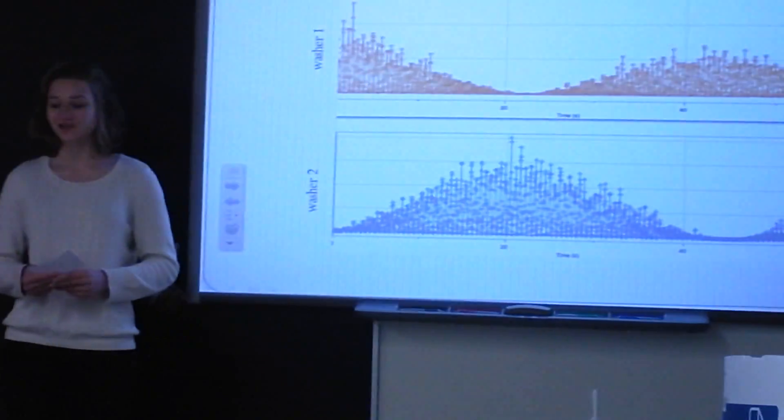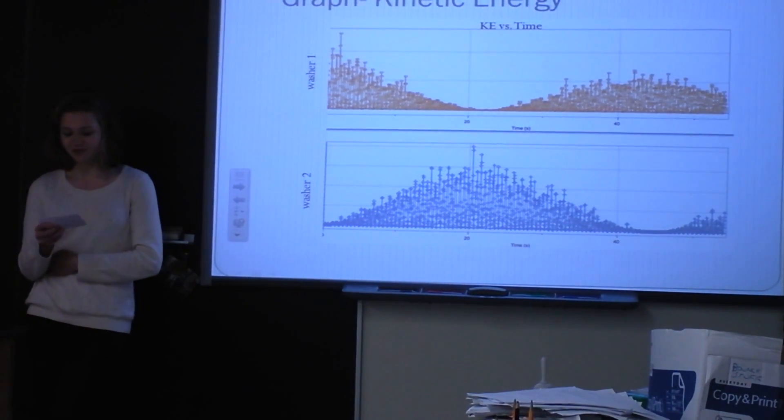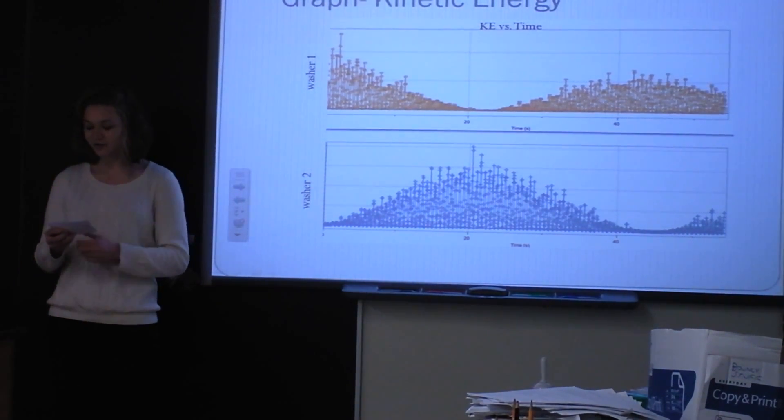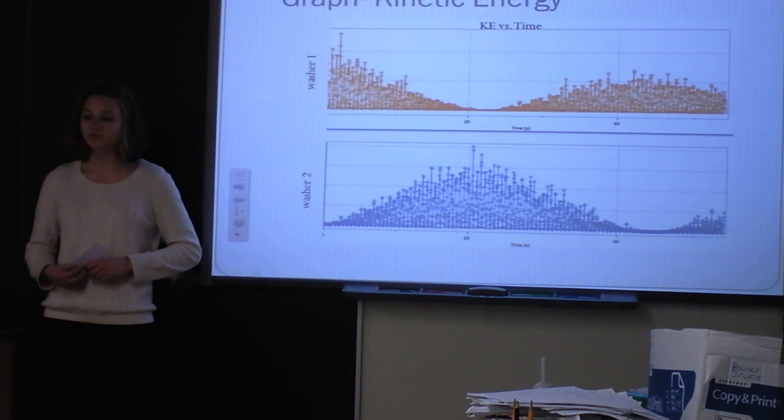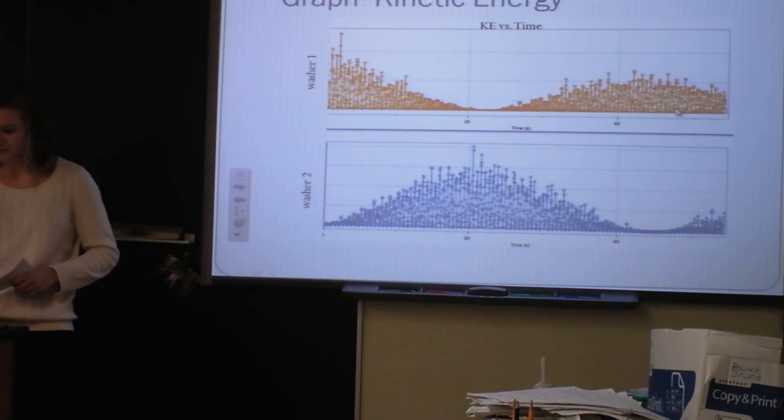So this is my graph of kinetic energy versus time, which I got by using one half mv squared, and I used the instantaneous velocity of the derivative of my position graph. And so like the position, it was interesting because when pendulum one had the greatest amount of kinetic energy, pendulum two had the least amount, and vice versa. And this happens at zero seconds, about 20 seconds, and about 50 seconds.